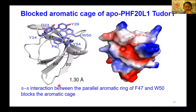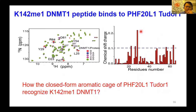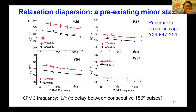We then titrated the methylated DLUQ1 peptide, which is a natural substrate of PHF20L1, and found this peptide is really binding to this Tudor domain. Chemical shift perturbations demonstrate that it is binding to the aromatic cage. This brings out a very interesting question: how could the closed-form aromatic cage of PHF20L1 recognize its ligand? We carried out NMR relaxation dispersion experiments and found that several residues proximal to the aromatic cage, for example Y79, have non-flat relaxation dispersion curves, meaning these residues are switching between two different states — the closed-form ground state and a pre-existing minor state.